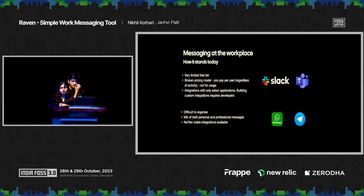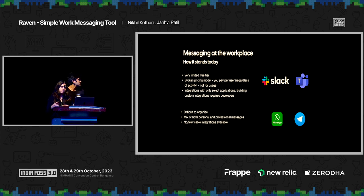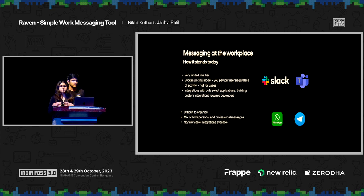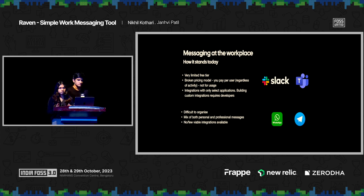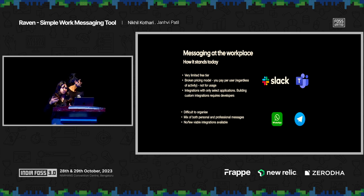Let's talk about integration. Slack and Teams do have integrations with other applications, but if you wanted to build an integration with a third-party application that doesn't have one available, you'd need a developer to build it — you cannot build it yourself if you're not a developer. And with WhatsApp and Telegram, while they're free to use, they mix personal and professional communications together, making it very difficult to organize all your work communications in one place.